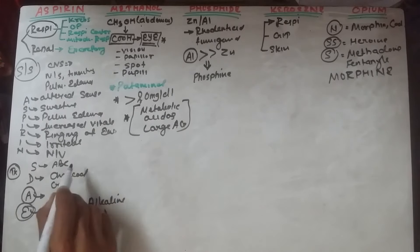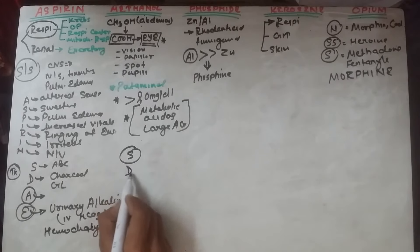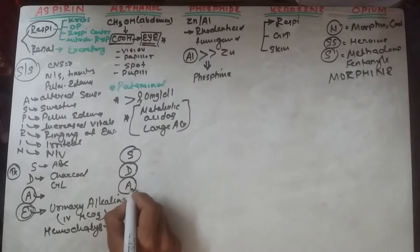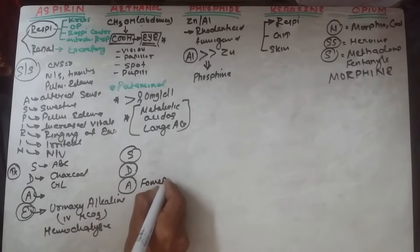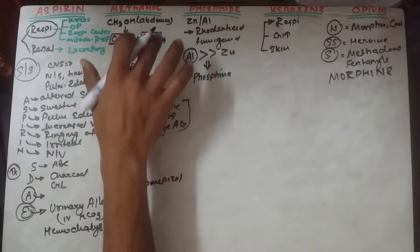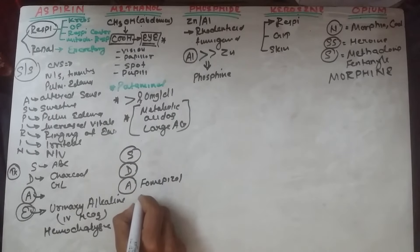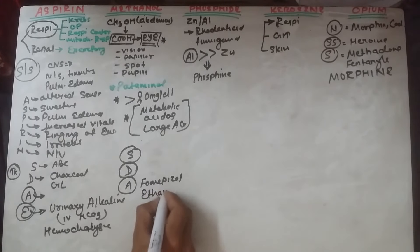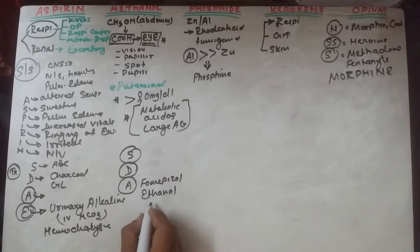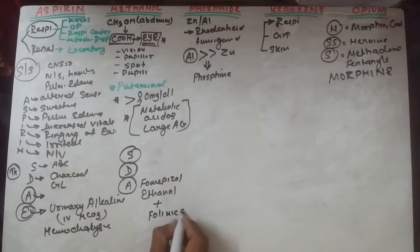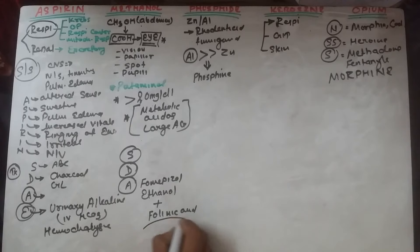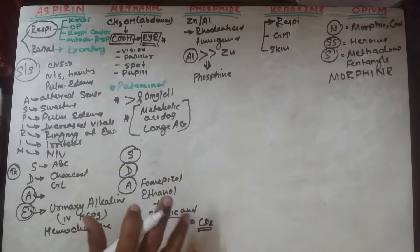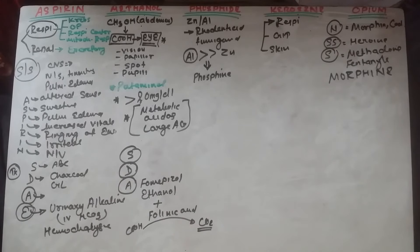Treatment: stabilize the patient, decontaminate via activated charcoal and gastric lavage. The antidote for methanol is fomepizole. If serum methanol is more than 20 mg/dL, also give ethanol. Additionally, give folinic acid, which enhances degradation of formic acid to carbon dioxide (CO₂). This is the definitive treatment for methanol poisoning.